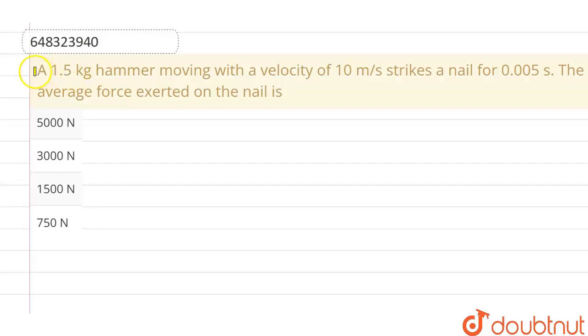a 1.5 kg hammer moving with a velocity of 10 meters per second strikes a nail for 0.005 seconds. We have to find out the average force exerted on the nail, and these are the given options.